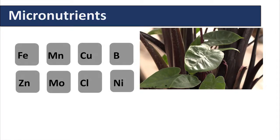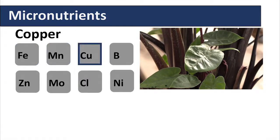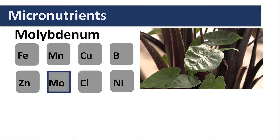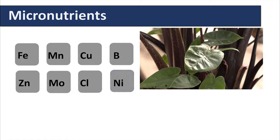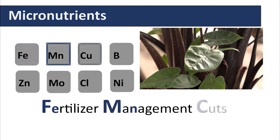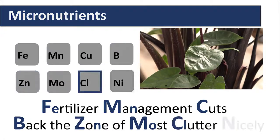Micronutrients are needed in small amounts in the plant. The micronutrients are iron, manganese, copper, boron, zinc, molybdenum, chlorine, and nickel. A way to remember this is: fertilizer management cuts back the zone of most clutter nicely.